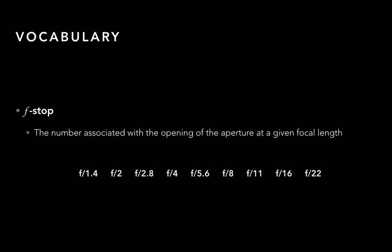The next term is f-stop. This is actually the number that is associated with an aperture at a given focal length. It's actually a ratio number and it has to do with the width of the opening versus the focal length. You don't need to know the formula, but you could look it up. The scale shown is a generic scale for a 35mm lens that runs from the largest opening of f/1.4 to the smallest opening of f/22.